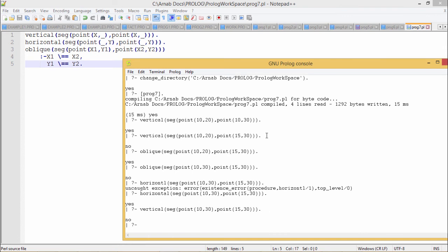But if I go for vertical, I shall get the output as no or false. In this way, my program has got tested thoroughly with different types of queries I have written under the goal section. Thanks for watching this video.